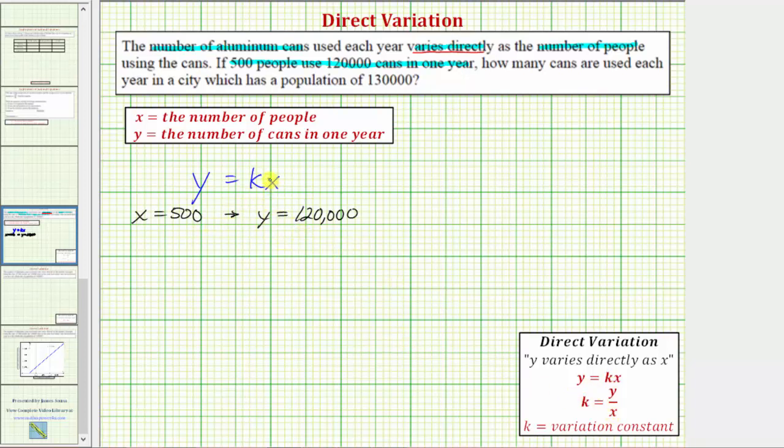I'm going to go ahead and make the substitution into this equation here. So, making the substitutions, we'd have 120,000 equals k times 500. To solve for k, we divide both sides by 500. Notice how the left side is y divided by x. So, k is equal to 120,000 divided by 500, which equals 240.